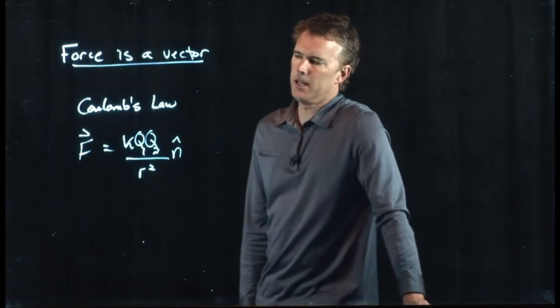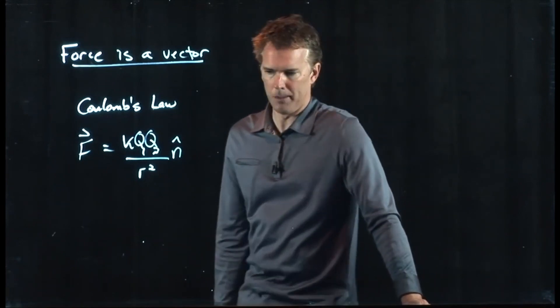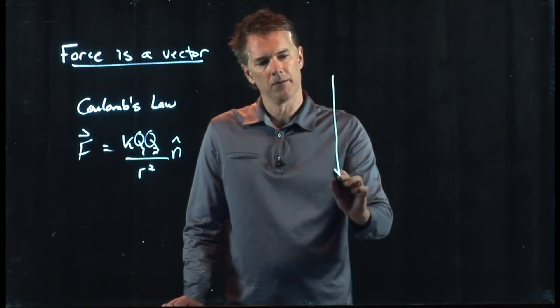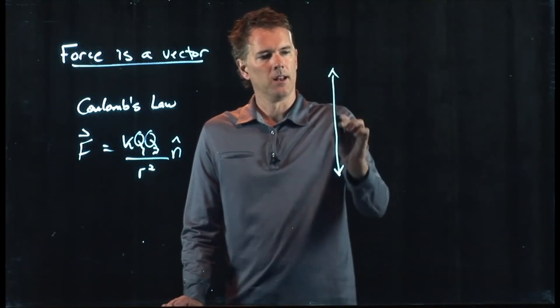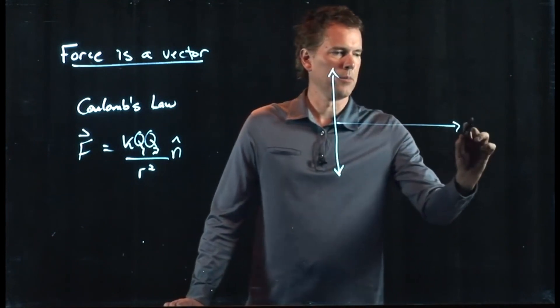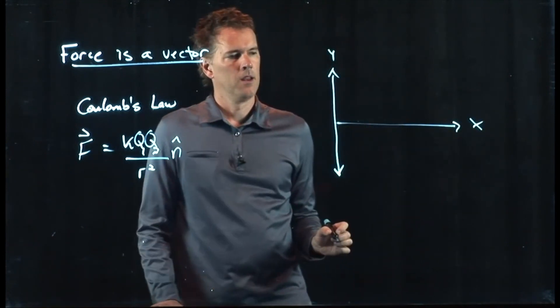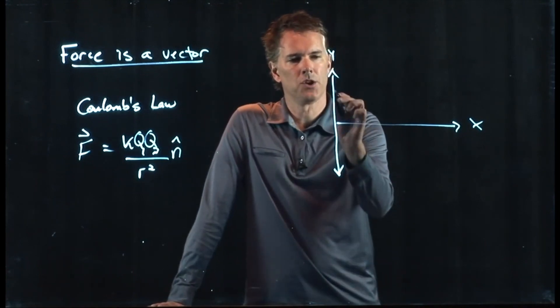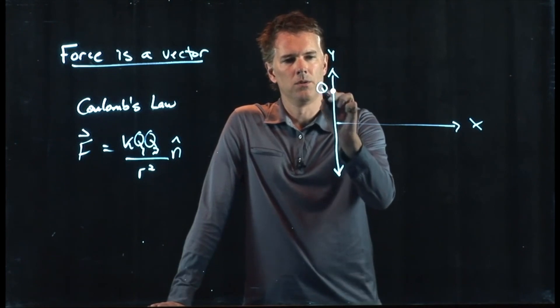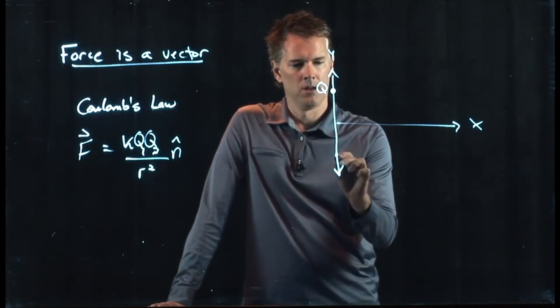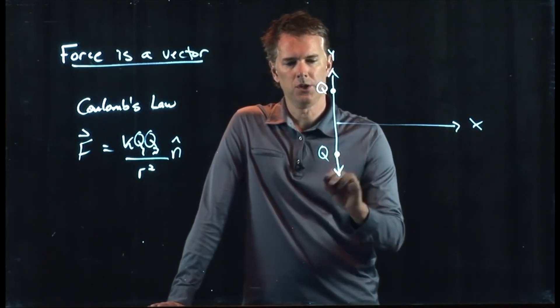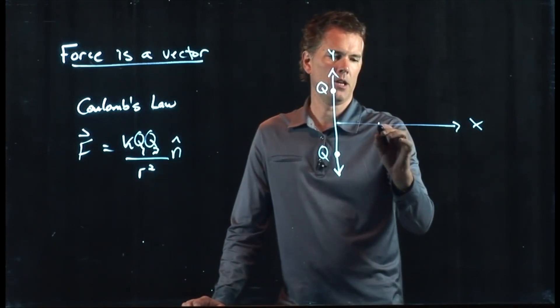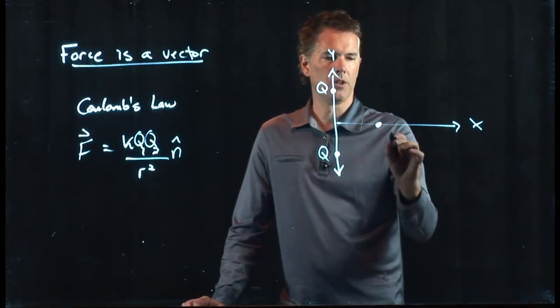So let's try an example and let's see if we can make maybe a simpler example than we had talked about earlier. Let's draw a coordinate system here, X and Y, and let's do this. Let's put a charge Q right there. We'll put another charge Q right there.